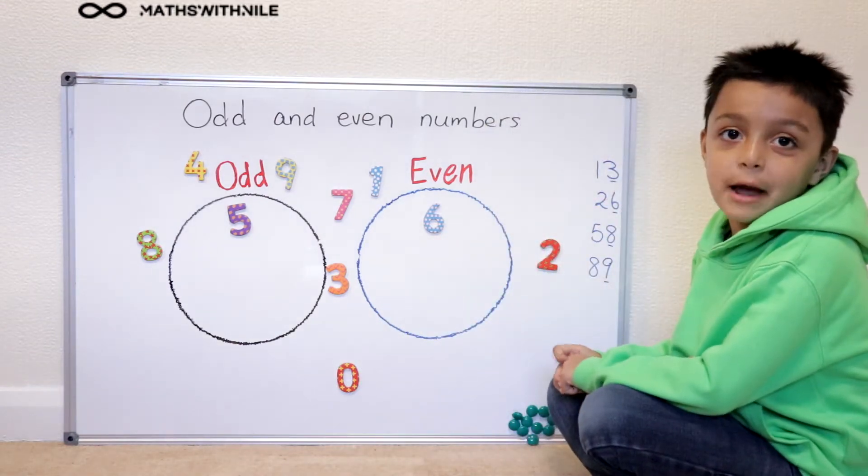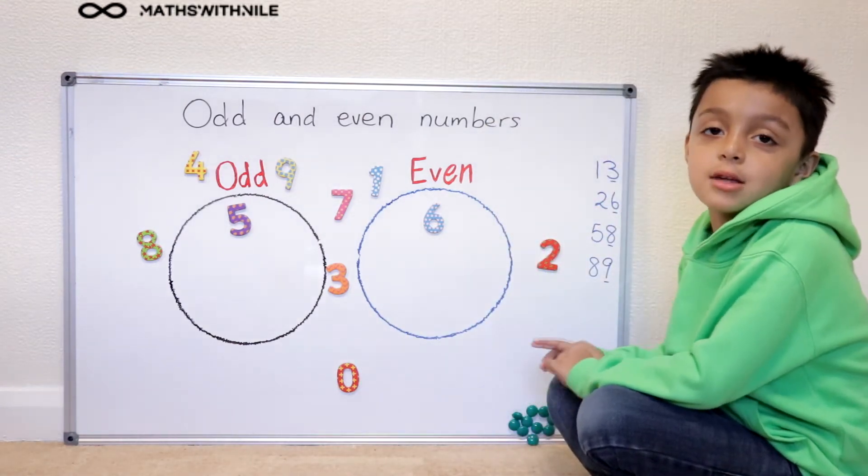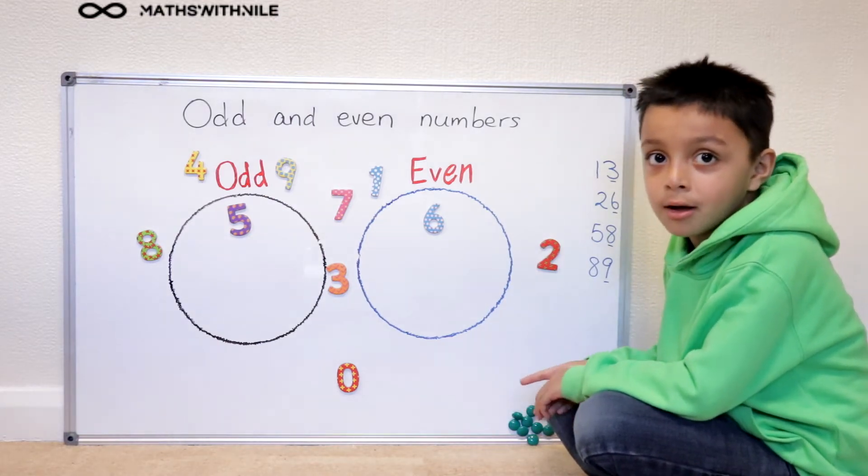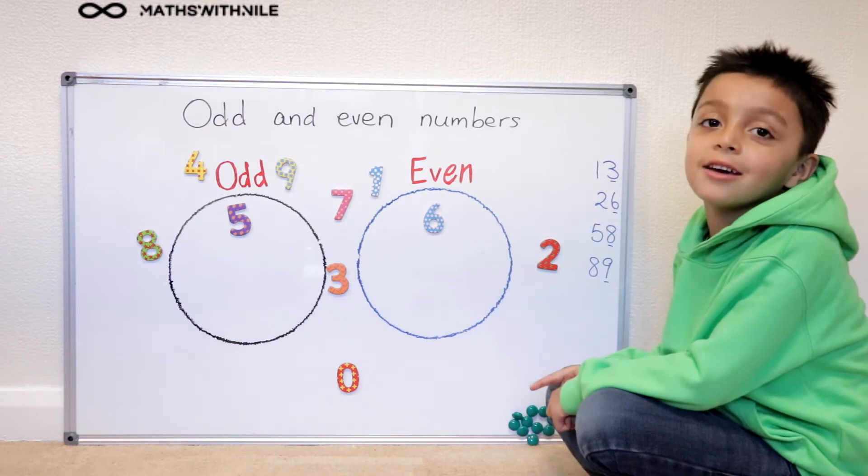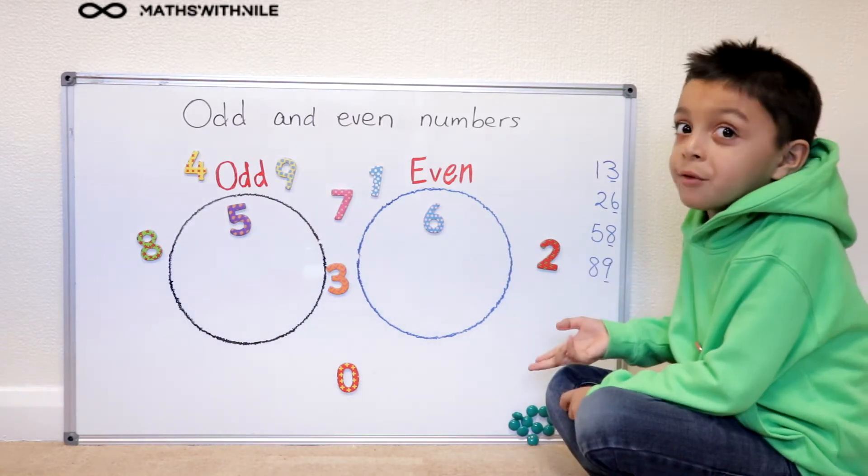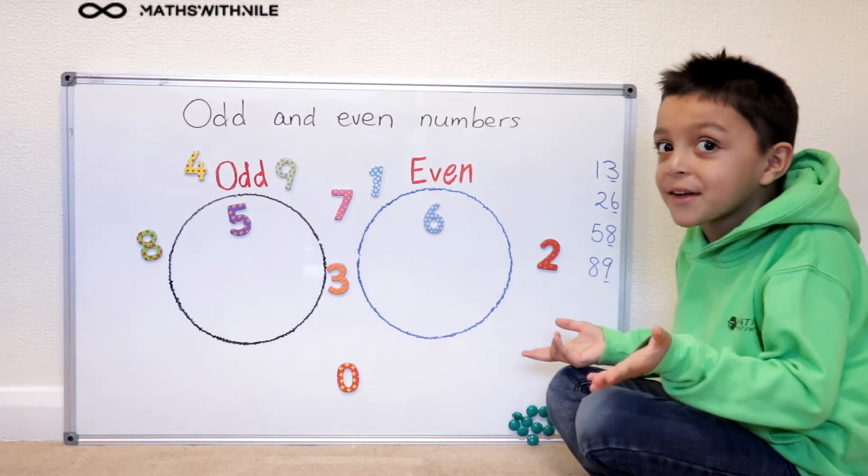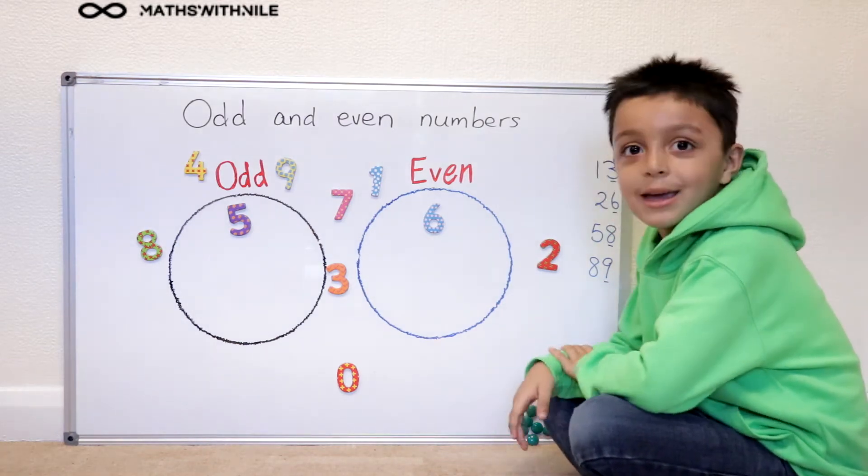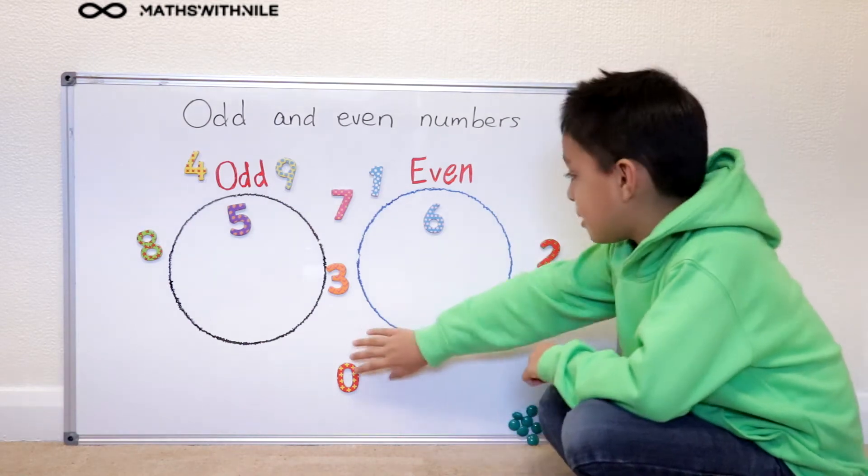Some people get mixed up with that one. Some people say it's an odd number, and some people say it's an even number. But it's really an even number. Even though it doesn't have any groups of twos, it doesn't have any left over either. So that means it's an even number.